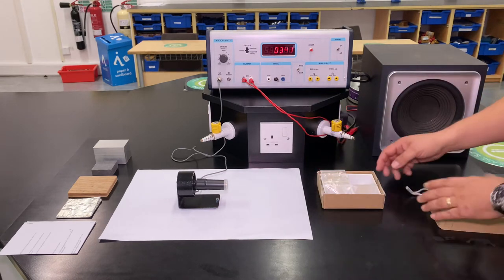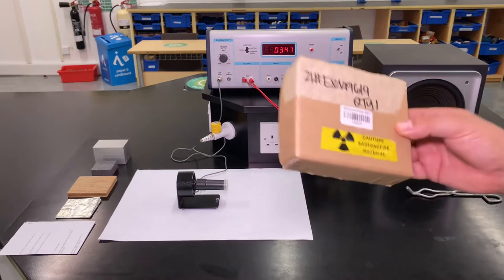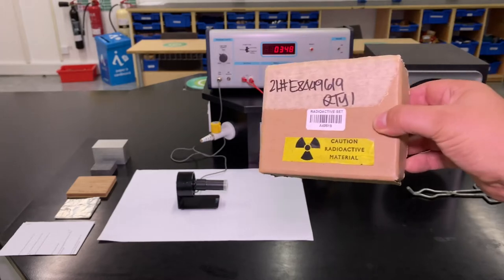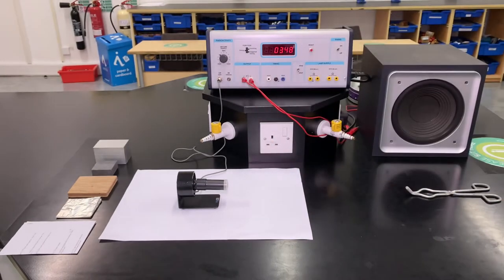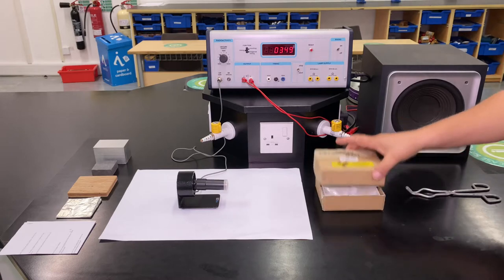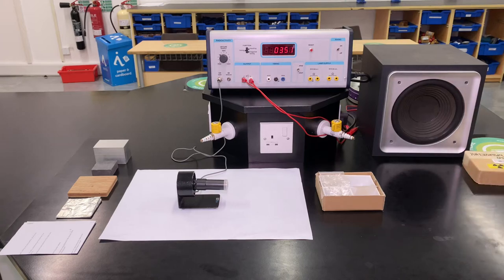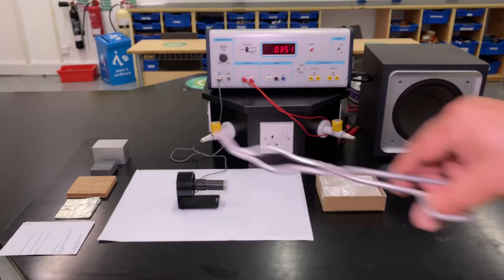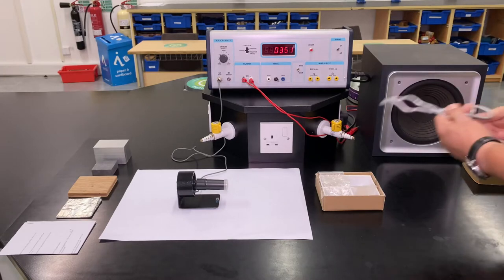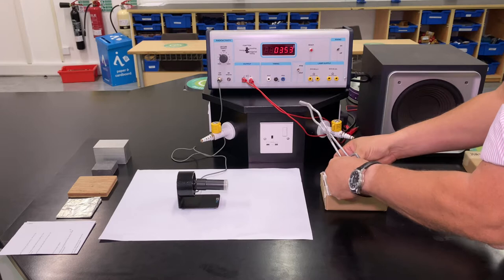The thing we're going to use, if you remember from a previous video, is some radioactive rocks. We're not allowed any radium, uranium, or plutonium in school for obvious reasons—the only thing we are allowed is some radioactive rocks. Safety-wise, I'm not going to touch them directly; I can only use the tongs for protection.